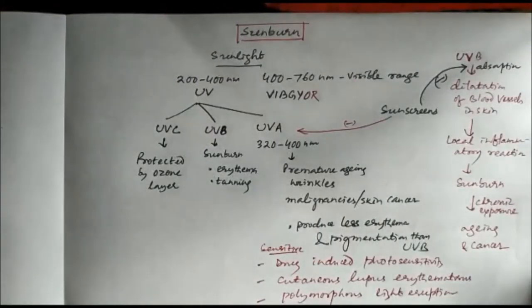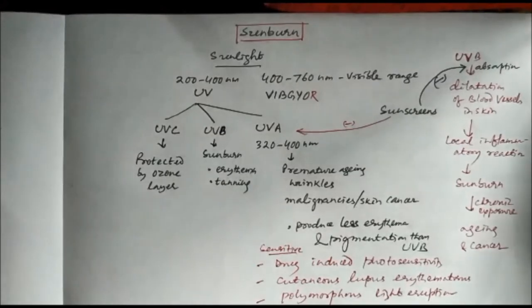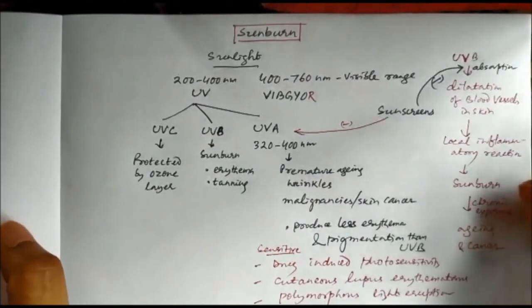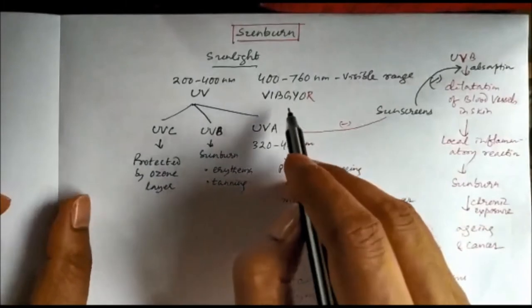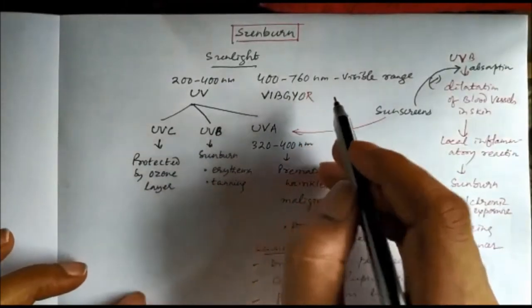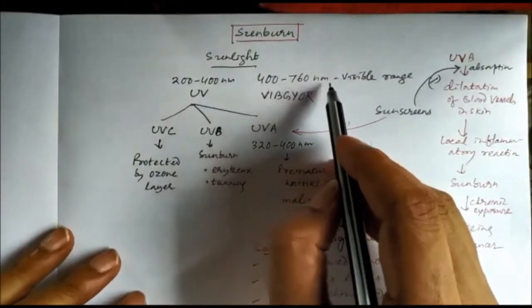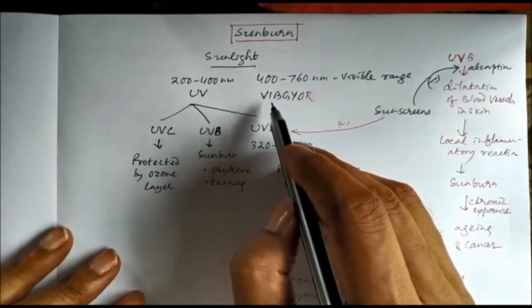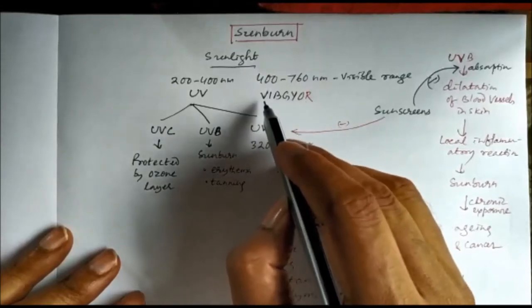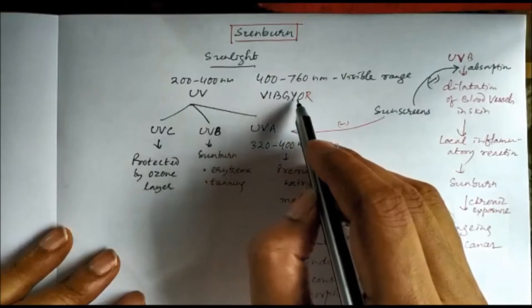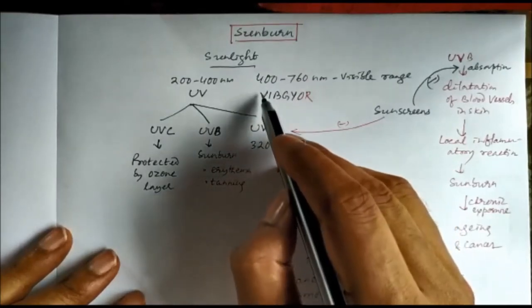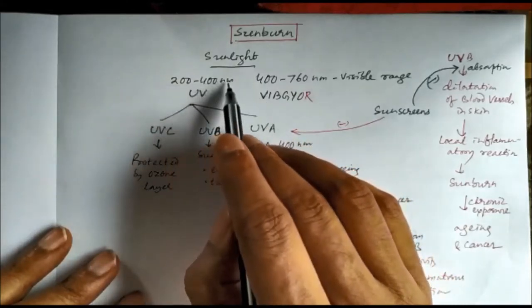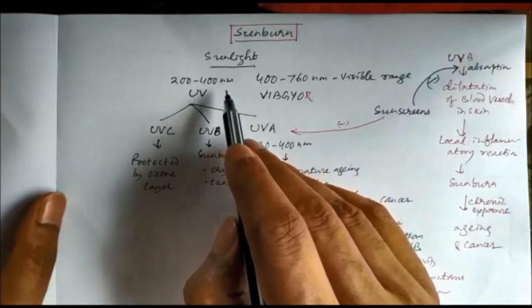Today we will study sunburn and sunscreens. The visible range of light is 400 to 760 nanometer, which includes light rays of different colors — Violet, Indigo, Blue, Green, Yellow, Orange and Red (VIBGYOR). Below this, from 200 to 400 nanometer, is UV light or UV rays.